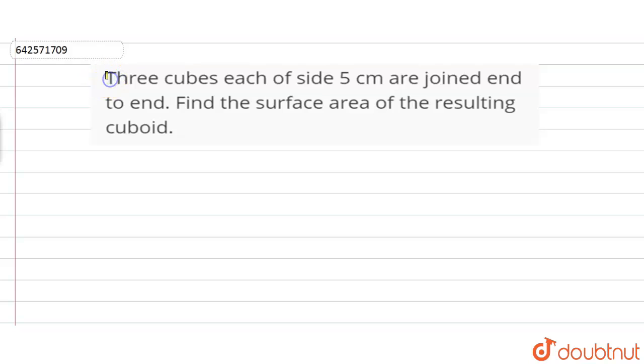In this question, we are given three cubes of side 5 cm that are joined end to end to form a cuboid. We have to find the surface area for the resulting cuboid.